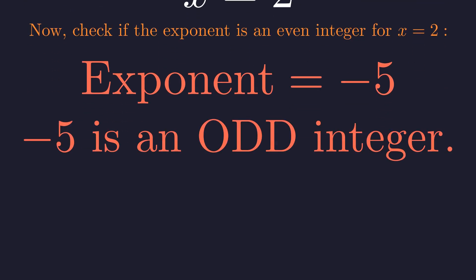Negative 5 is an odd integer, not an even one. The condition is not met. Therefore, x equals 2 is not a solution.